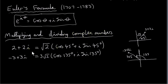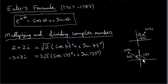Now I want to discuss multiplying and dividing complex numbers using two examples. The complex number 2 plus 2i can be written as root 2 times cos 45 degrees plus i sine 45 degrees. Its modulus is root 2 and its argument is 45 degrees, or pi over 4 radians. For the complex number minus 3 plus 3i, its modulus is 3 root 2 — found using Pythagoras' theorem, giving root of 9 squared plus 9 squared, which is 3 root 2. The angle it makes with the positive real axis measured anti-clockwise is 135 degrees, or 3 pi over 4 radians.